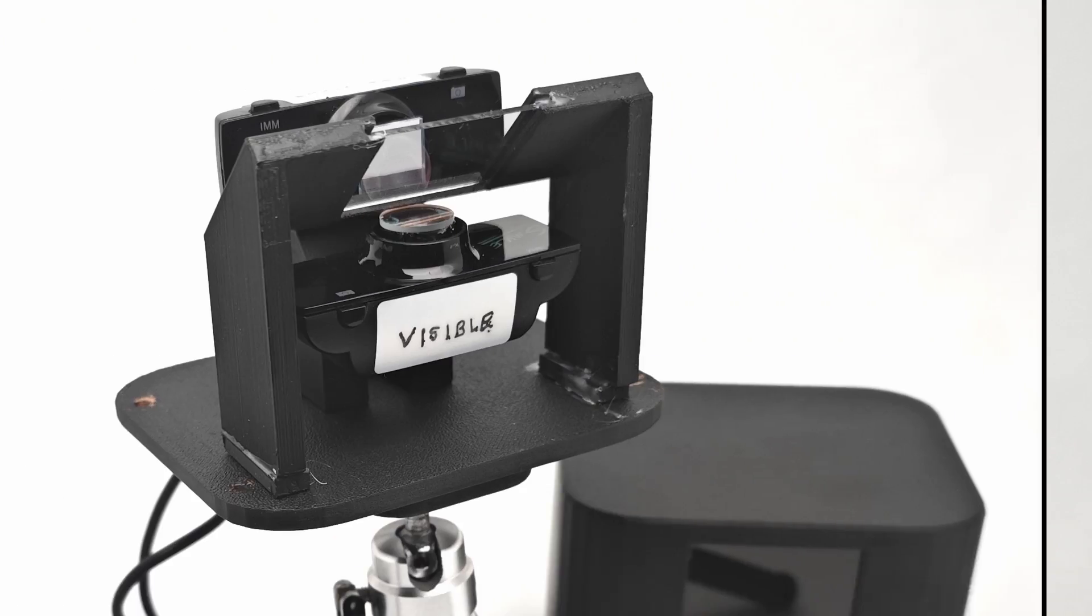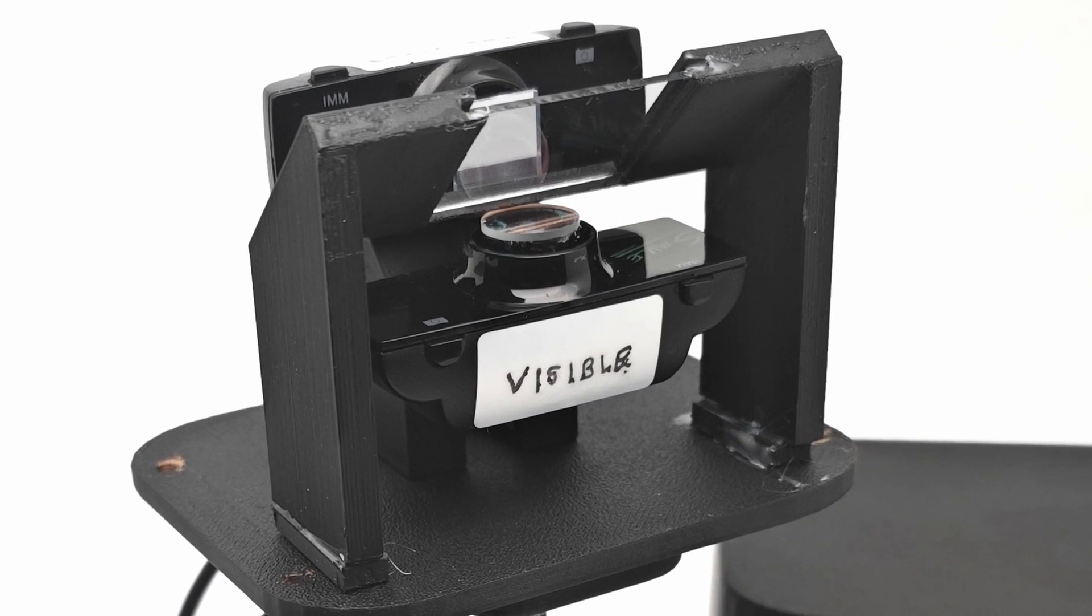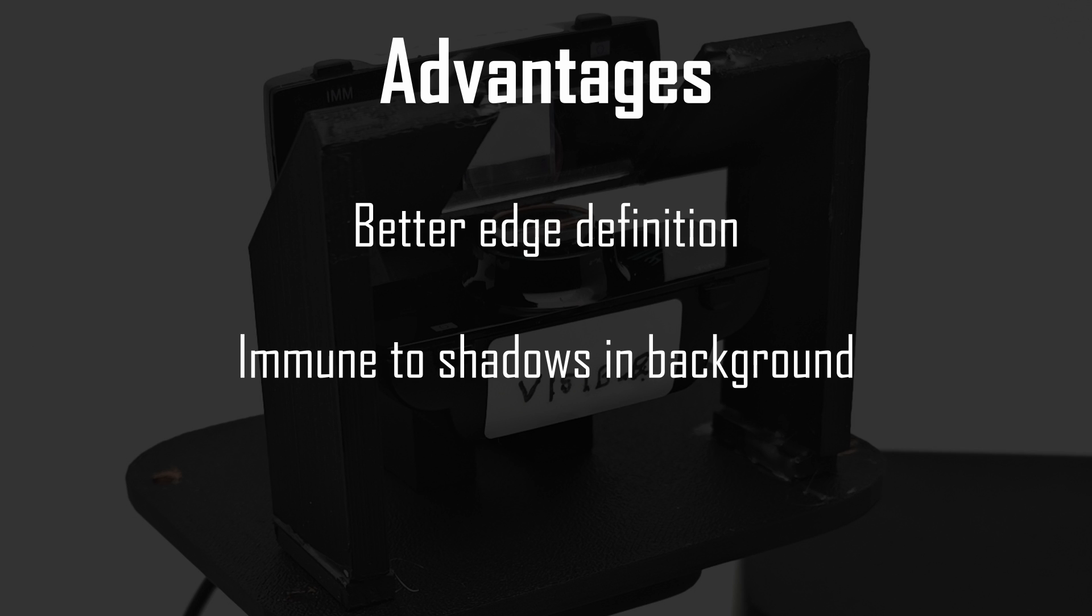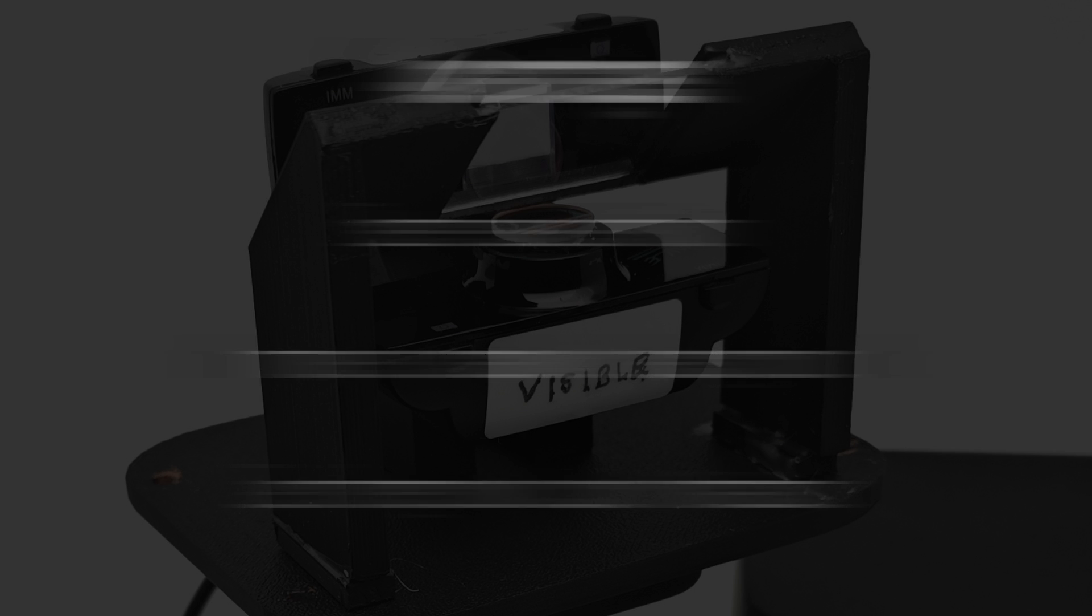Infrared chroma keying does have some distinct advantages over standard green screen. For starters, it can generate crisp edges to the foreground, far better than normal chroma keying can. Secondly, this technique is immune to the lighting of the foreground causing shadows on the background screen. And finally, there are no limitations to the colors that can be used in the foreground.